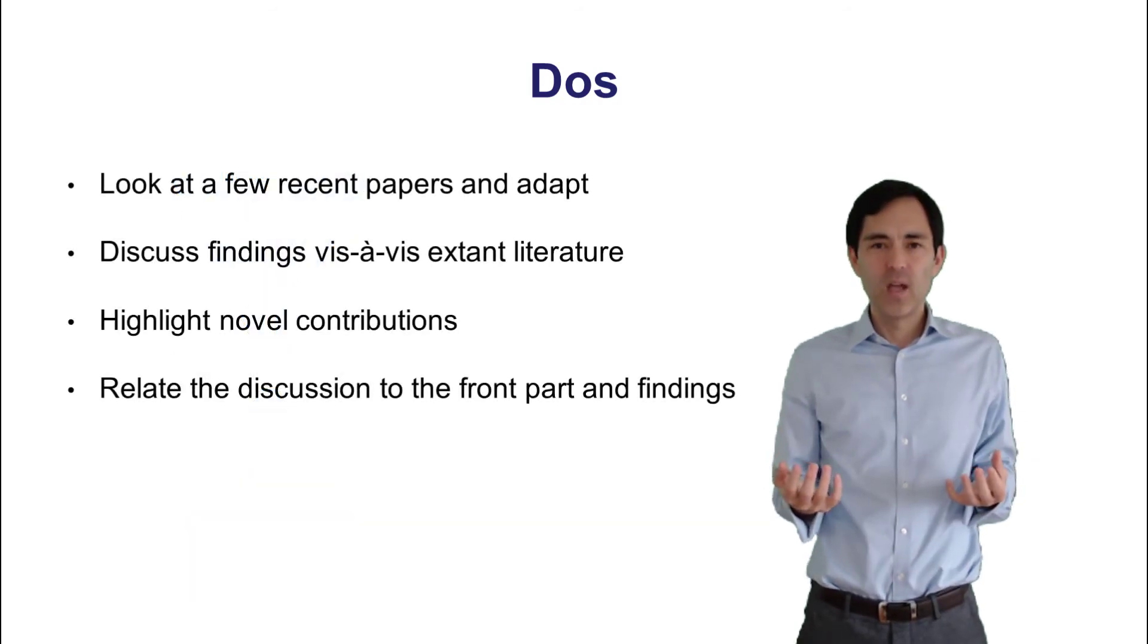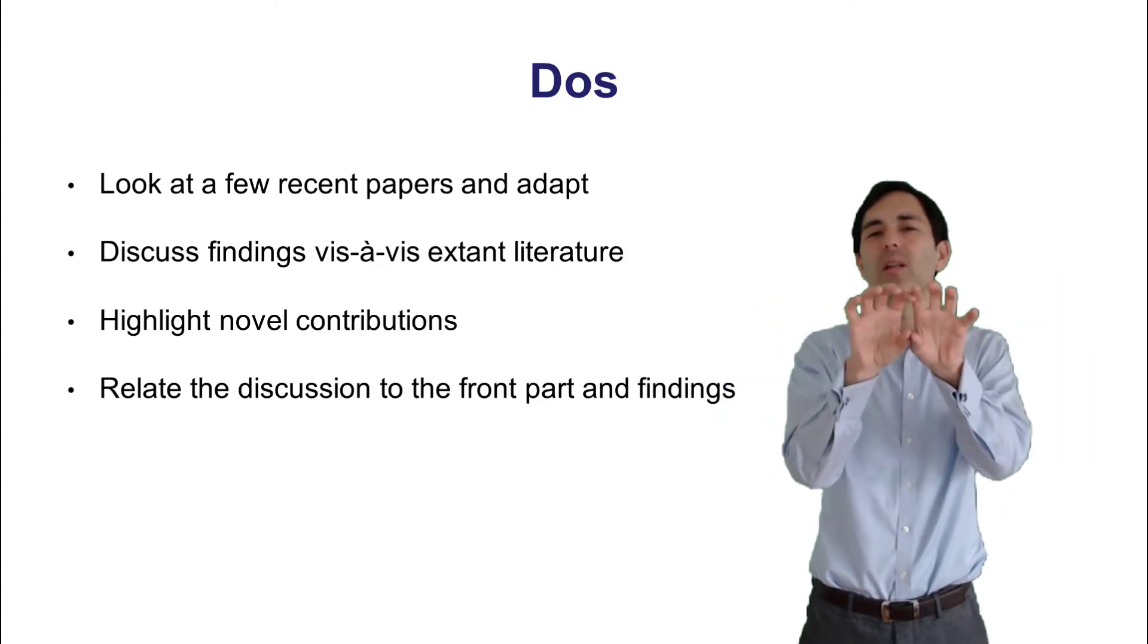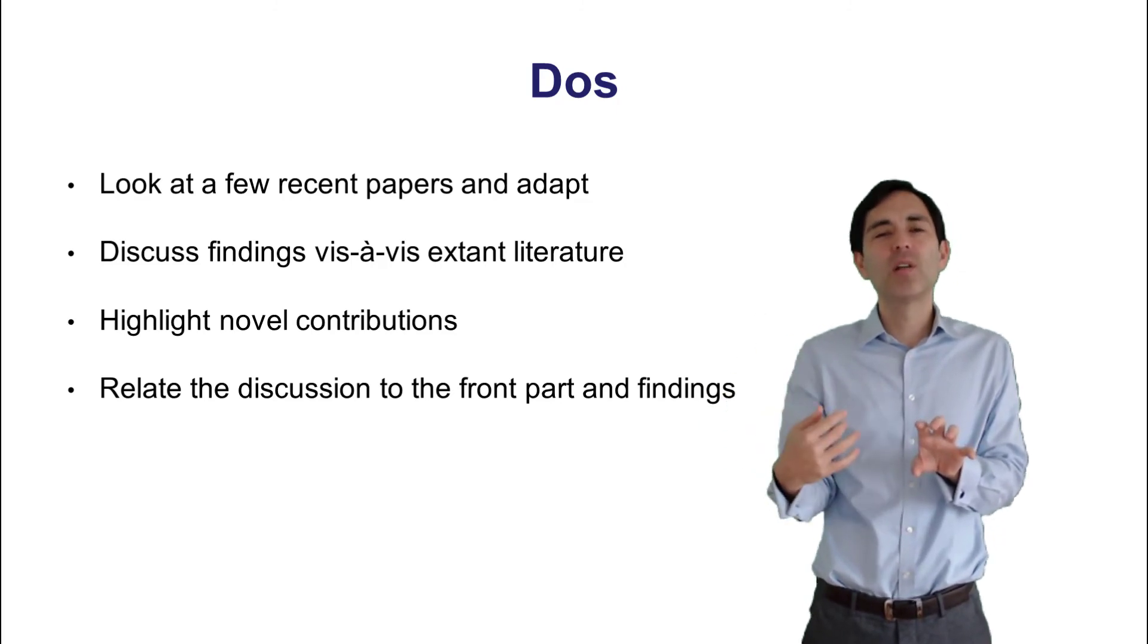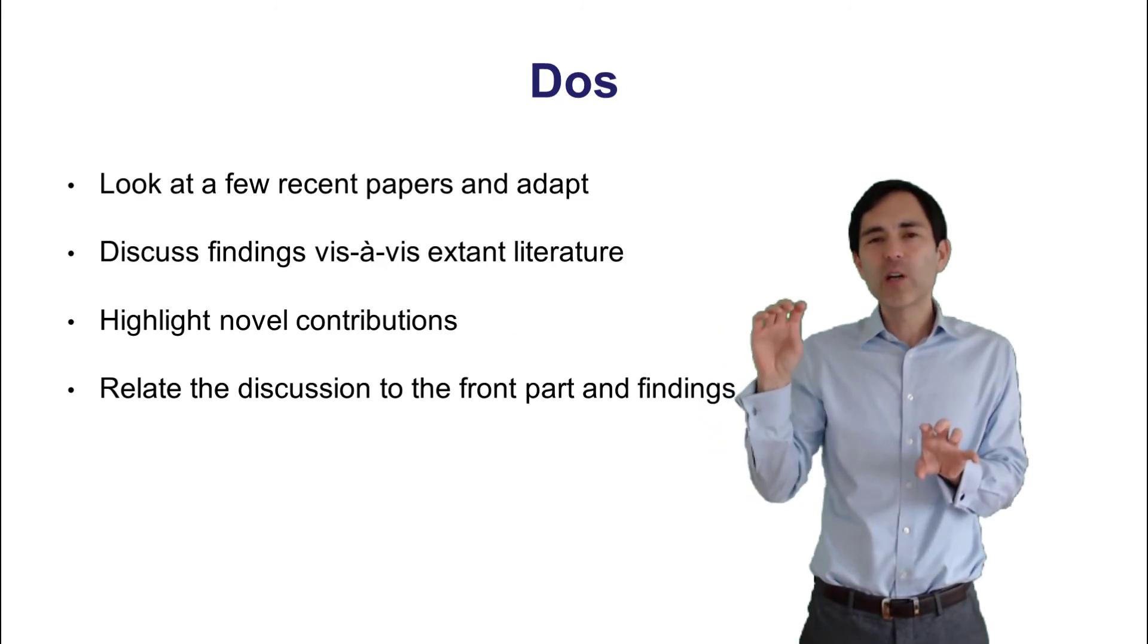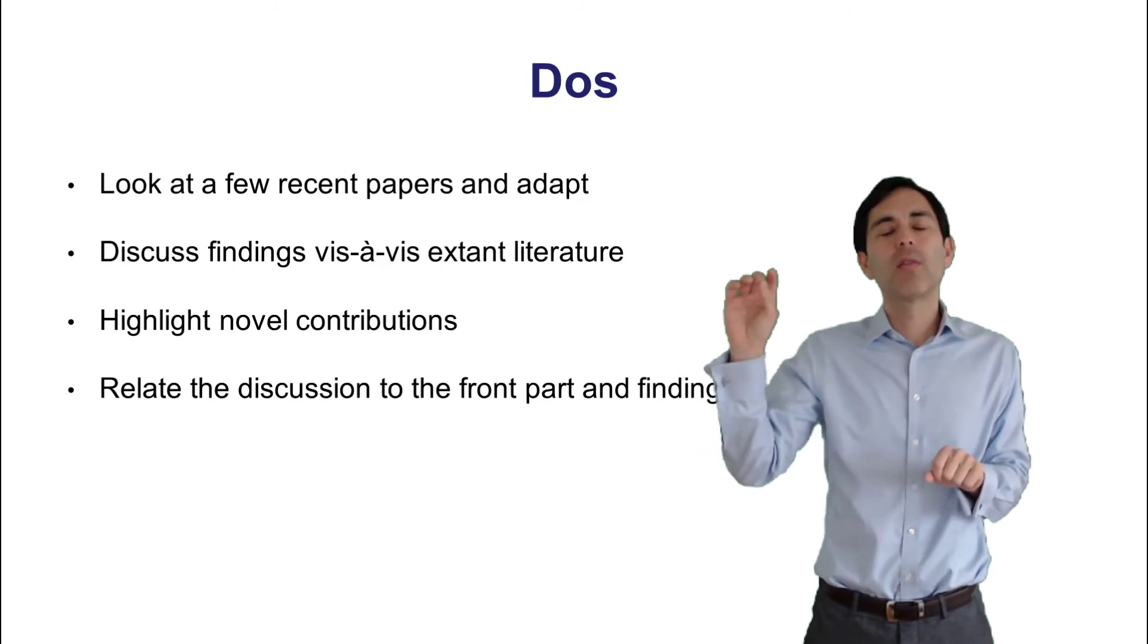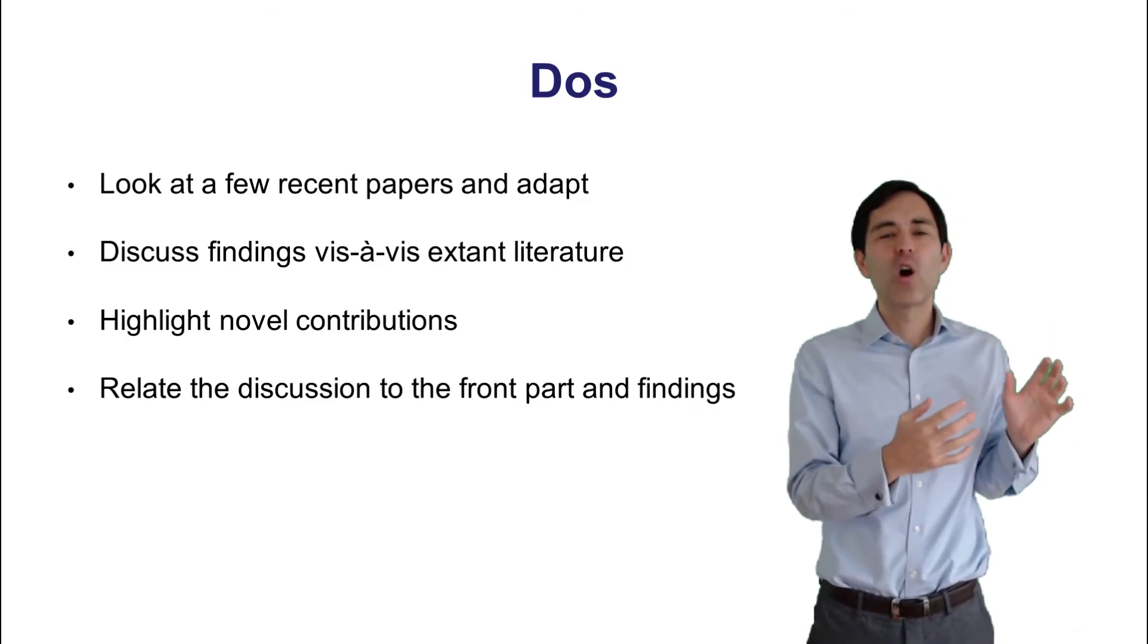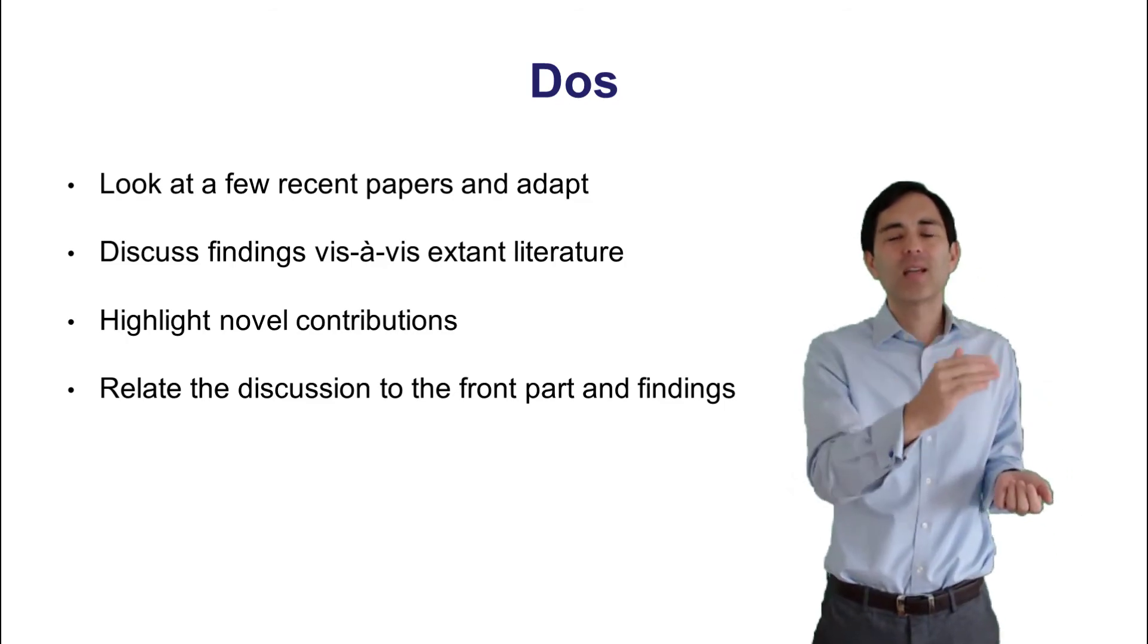More practically, you should be able to read the introduction and the discussion only. And they should perfectly match. In the introduction, you would write about the topic, what it is about. And in particular, about your expected contributions. I would recommend you number these expected contributions. First, second, third. In the discussion section later on, you should be able then to elaborate on these expected contributions. Again, I would recommend numbering the first, second and third.